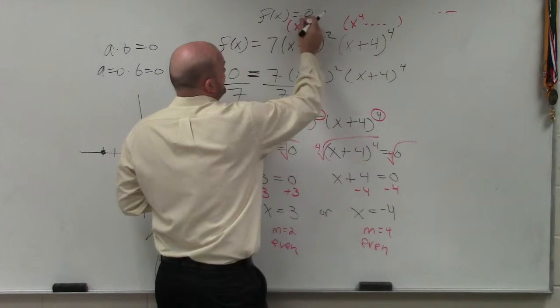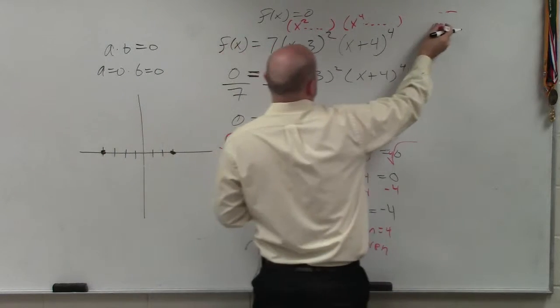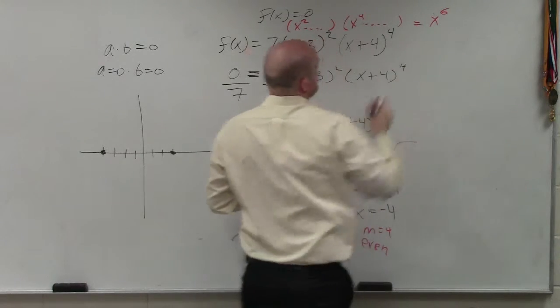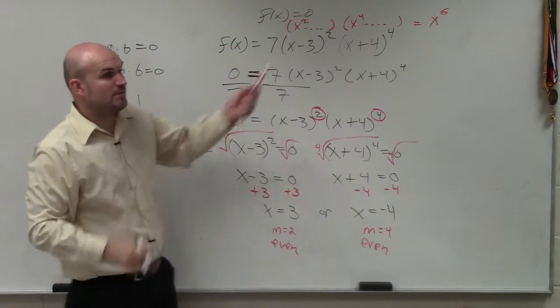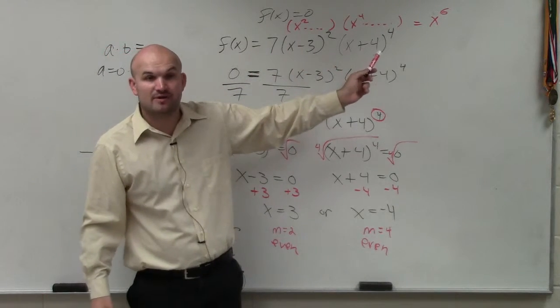If you were to multiply those two, you'd have x to the 6th. Right? And then we look at what the coefficient would be. What would be 7 times 1? That would be positive, right?